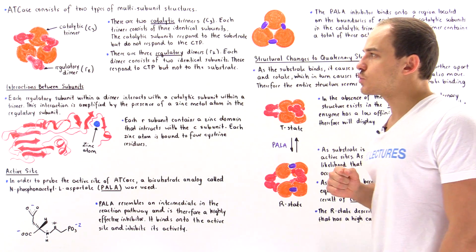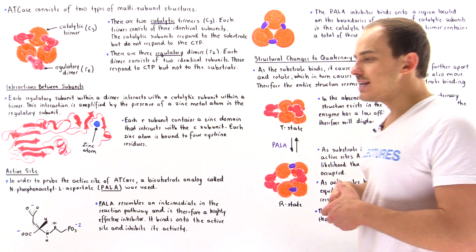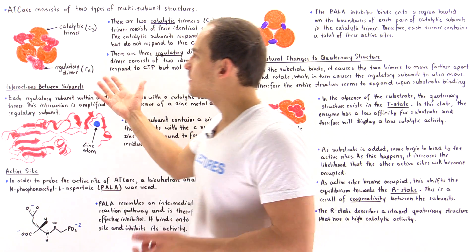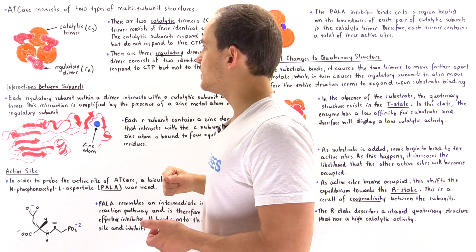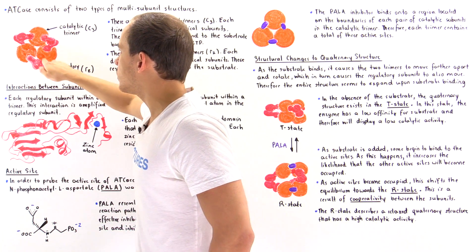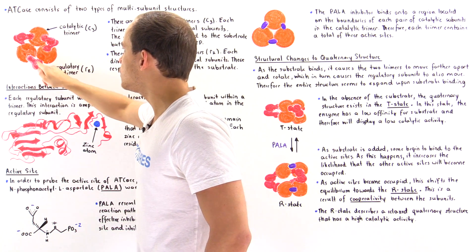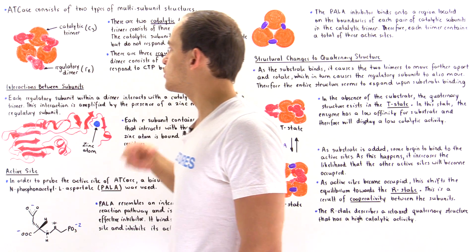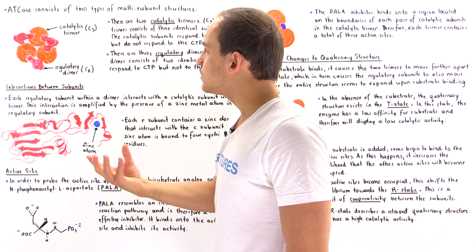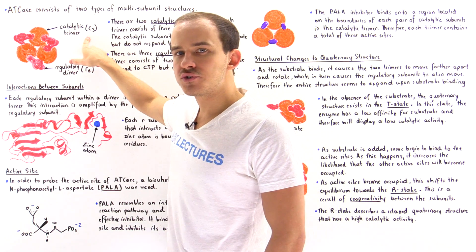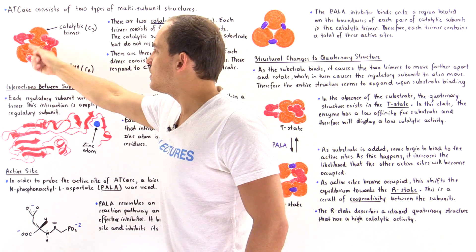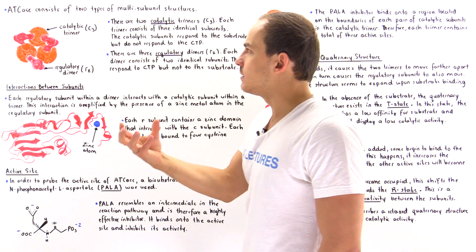That makes a total of twelve subunits that make up the quaternary structure of aspartate transcarbamoylase. Examining the three-dimensional structure from top to bottom, the red dimers are the regulatory dimers — each one consisting of two regulatory chains. The entire orange structure constitutes a single catalytic trimer, with one, two, three orange subunits, each being a catalytic chain.